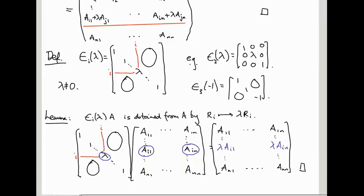So if we want to multiply row i by lambda, we multiply the whole matrix A by E_i(λ), and this is an elementary matrix of type two.